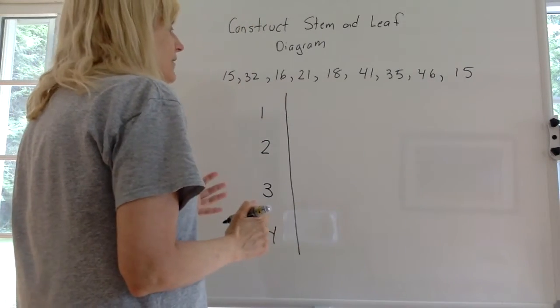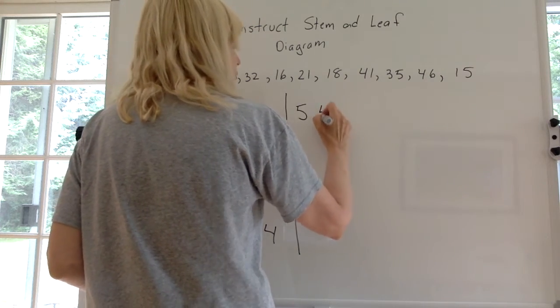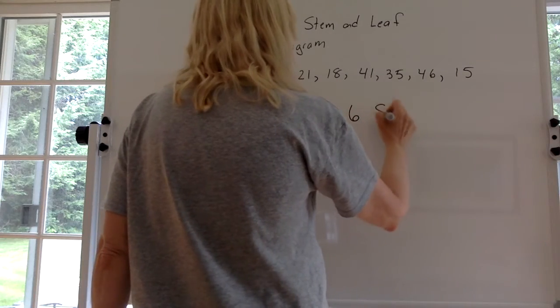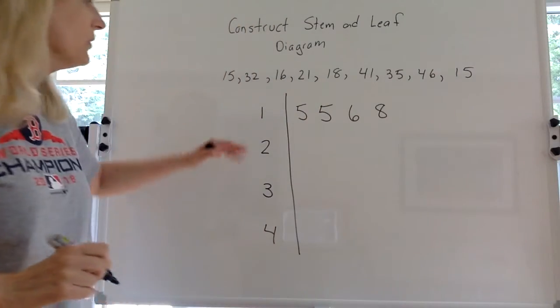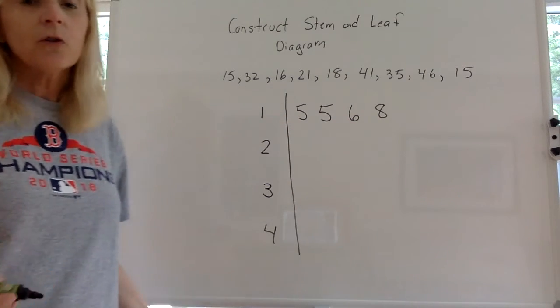What you want to do is write down each leaf. We have two 15s, so you're going to write down the two 5s, the two leaves. We have a 16 and then we have an 18. When you write these down, put the numbers going from smallest to biggest to organize them that way.